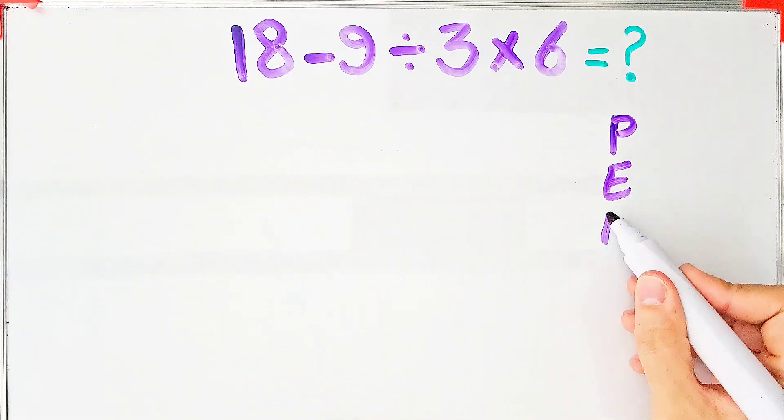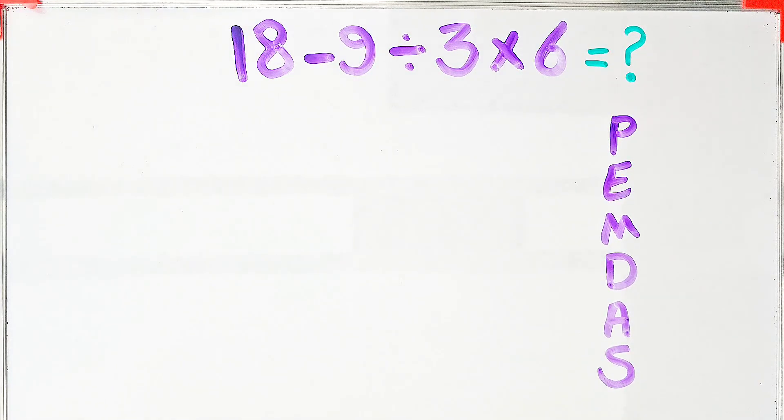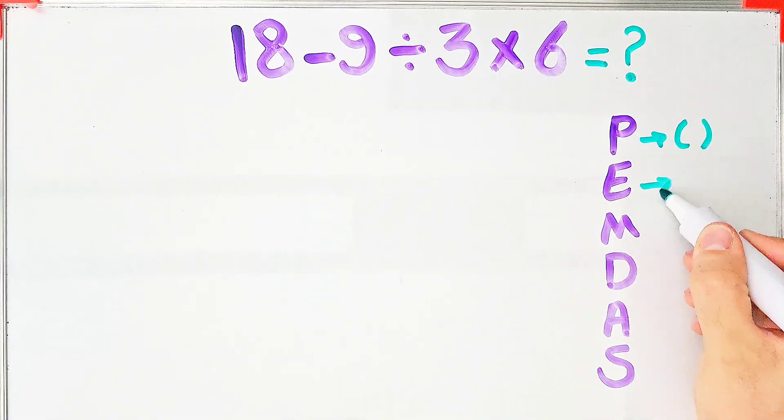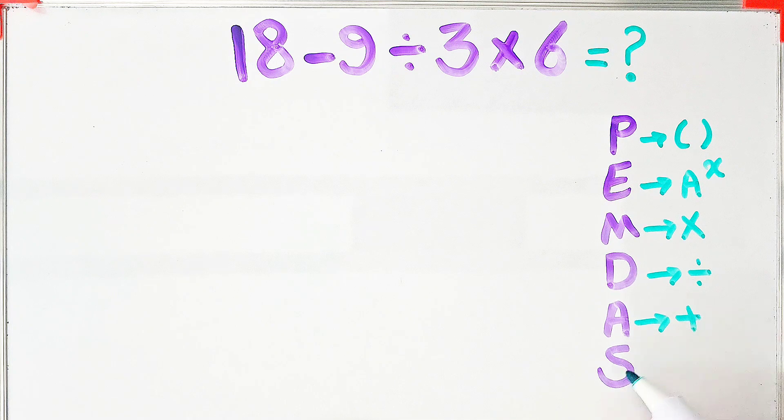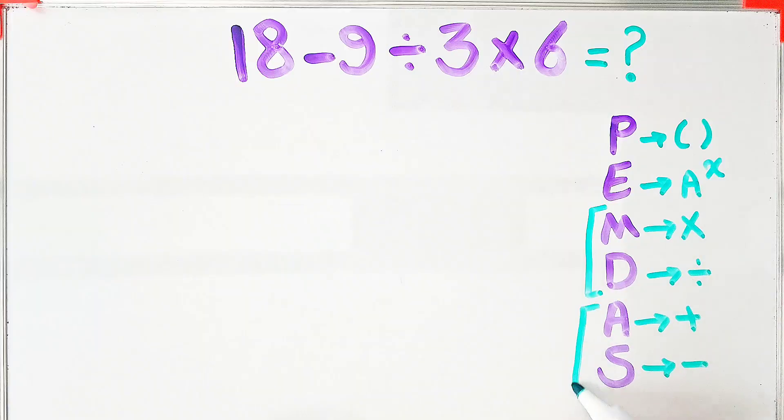PEMDAS shows the priority of the mathematical operations. If you don't pay attention to this rule, you get the wrong answer. In this rule, P stands for parentheses, E stands for exponent, M stands for multiplication, D stands for division, A stands for addition, and S stands for subtraction. Multiplication and division have the same level of priority, also addition and subtraction have the same priority.